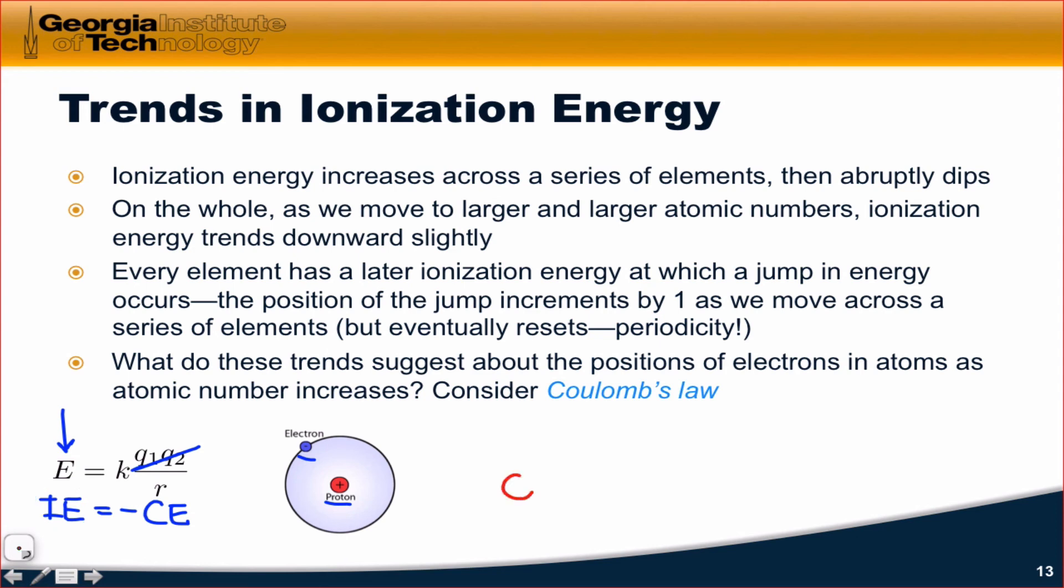What the first ionization energy seemed to suggest is that, at least within a finite series of elements, as we add electrons, those electrons actually get slightly closer to the nucleus. Ionization energy is increasing, which means the distance R between the electron and the nucleus is actually decreasing somewhat as we add more electrons to the atom, which is interesting to think about.